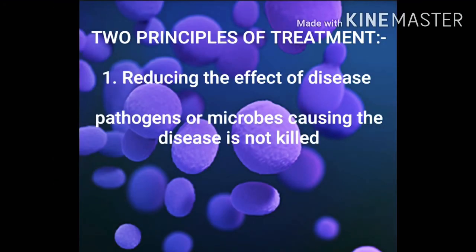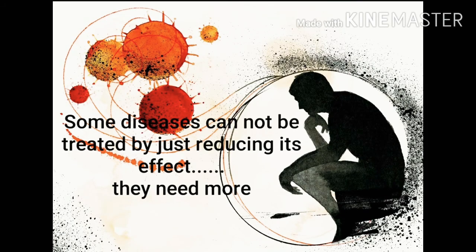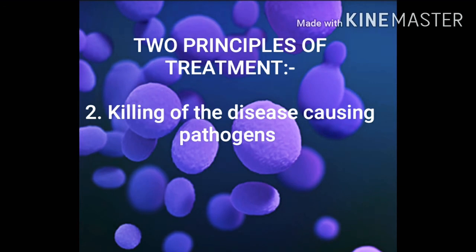So here, treatment is being done according to the symptoms that are visible. A particular pathogen — the disease-causing pathogen — is not being killed. This principle involves only the reduction of the effect of disease, not the killing of the pathogen. Sometimes the treatment works, but some diseases have symptoms like fever and loose motions where treatment cannot happen just by stopping their effect. For those diseases, the second principle is to kill the microbes causing infectious diseases — by giving medicines that kill the exactly responsible pathogens.